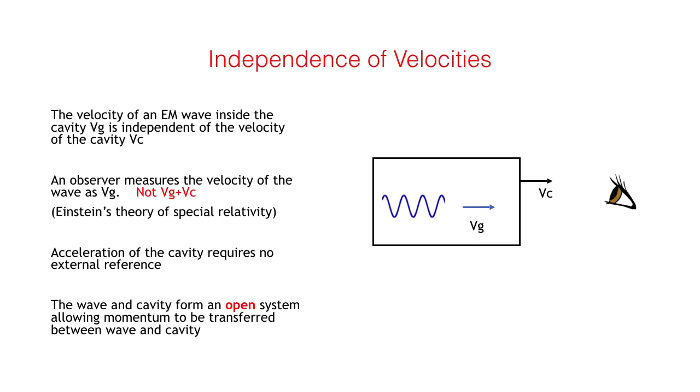It follows that if an electromagnetic wave is traveling inside a cavity with velocity vg, no matter what the velocity of the cavity vc, an external observer will still measure the wave velocity as vg, not vg + vc. vg is therefore independent of vc.